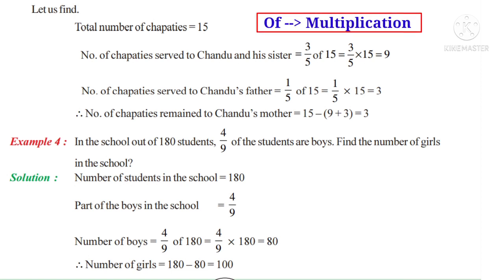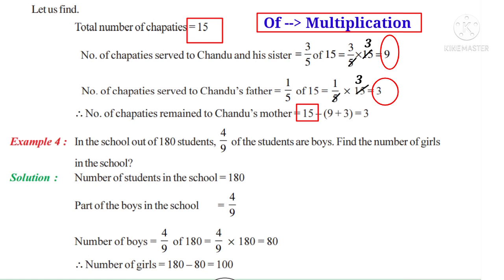Number of chapatis served to Chandu and his sister equals 3/5 of 15, that is 3/5 × 15. On simplification by 5, that is 3 × 3 = 9 chapatis. Number of chapatis served to Chandu's father equals 1/5 of 15, that is 1/5 × 15 = 3 chapatis. Therefore, chapatis remaining for Chandu's mother = 15 − (9 + 3) = 15 − 12 = 3 chapatis.